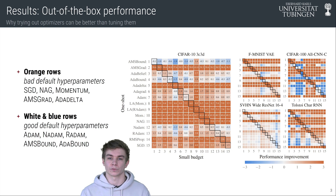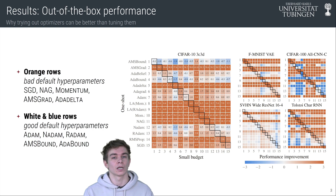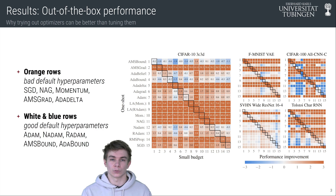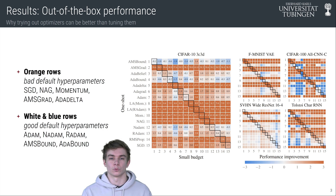We can observe orange rows for SGD, Momentum, and Nesterov Momentum on multiple problems, supporting the intuition that non-adaptive methods require more tuning. Conversely, a white or even blue row signals well-performing default settings, since even tuned optimizers do not significantly outperform it. Adam, Nadam, and Radam, as well as AMSBound, AdaBound, and AdaBelief, all have white and blue rows on several but not all problems.